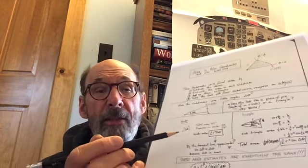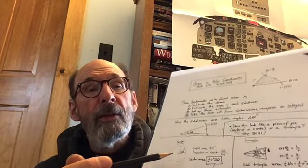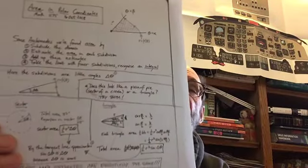The sample radius is what you use for that and you get this estimate: one half r squared delta theta. That's the sector way.